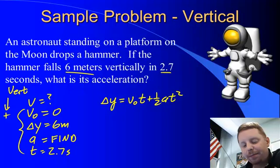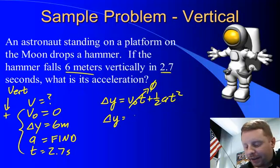And what's really nice about this problem is if we look, v-naught is zero, so zero times anything is zero. This simplifies to be Δy = ½at².